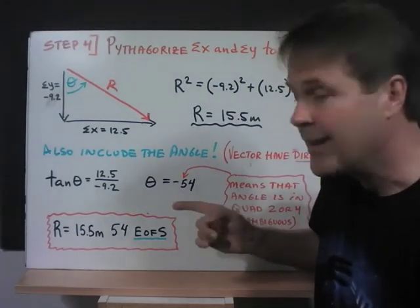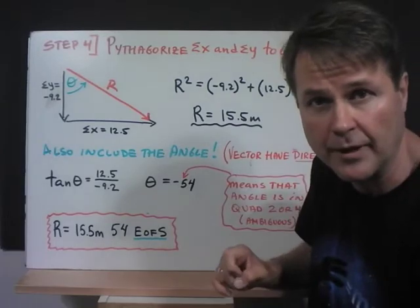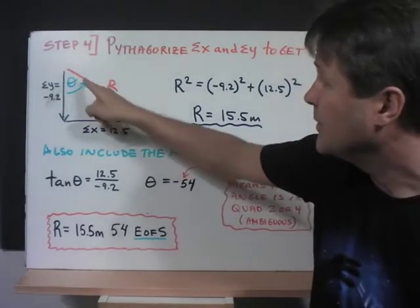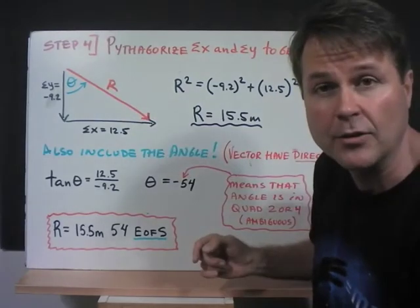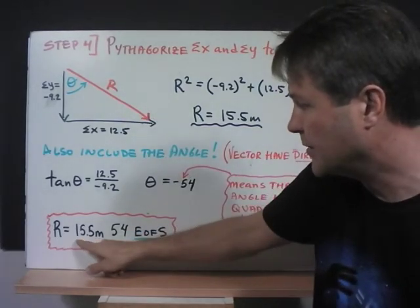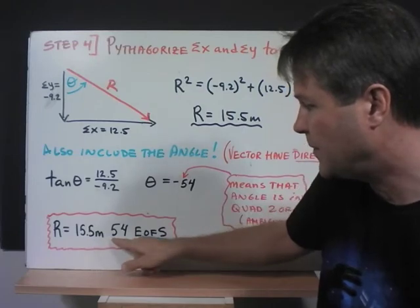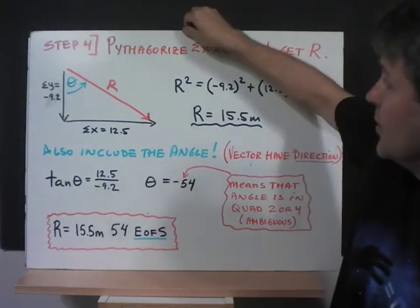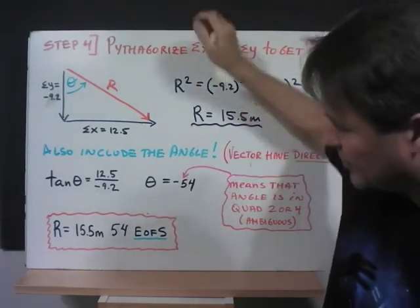That's why it was important for us to sketch that original diagram at the beginning to figure out that R is in fact in quadrant four. So that means that R is 15.5 meters, 54 degrees east of south. Add a little degree symbol there, please.